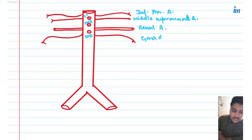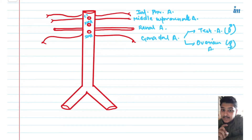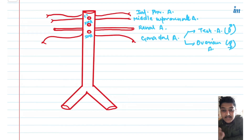The gonadal artery can be the testicular artery in males or the ovarian artery in females. If it is the testicular artery, it supplies the testes, epididymis, and spermatic cord. If it is the ovarian artery, it supplies the ovaries only.